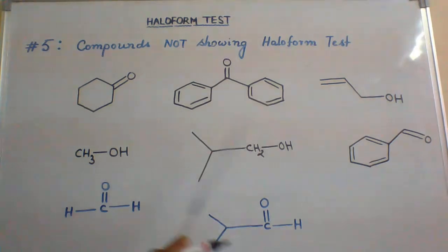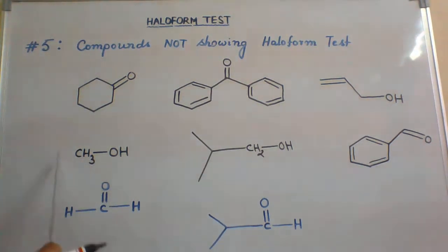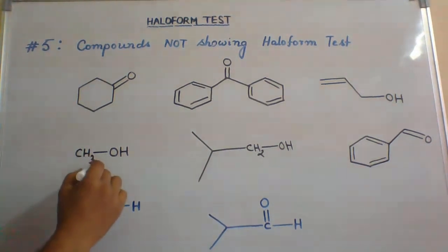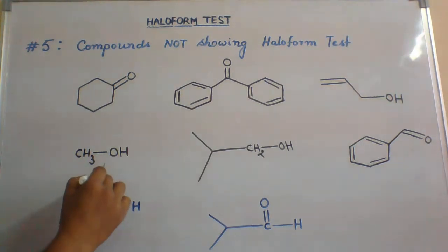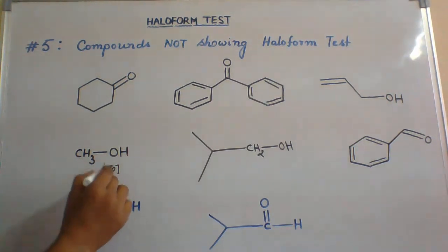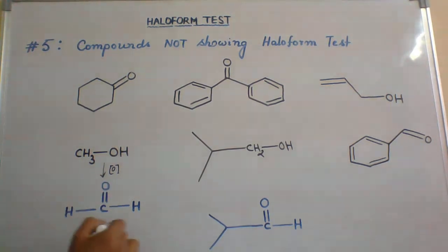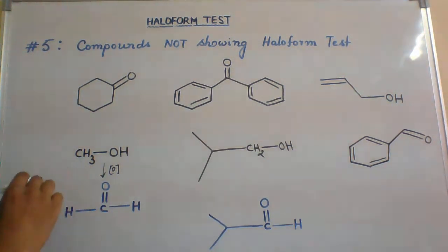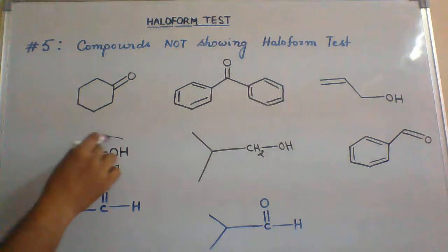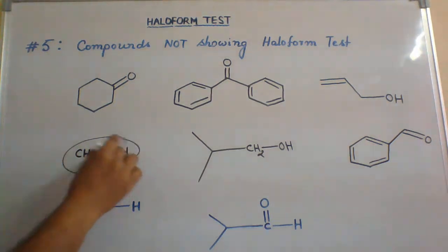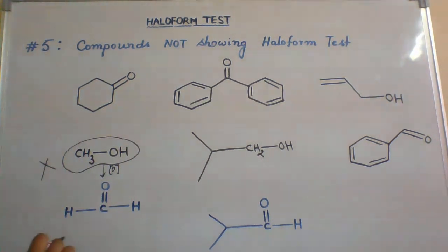Similarly, methyl alcohol — if it undergoes oxidation, we get formaldehyde (methanal). Methanal does not have a methyl keto group, so methyl alcohol will not show either the iodoform or haloform test.